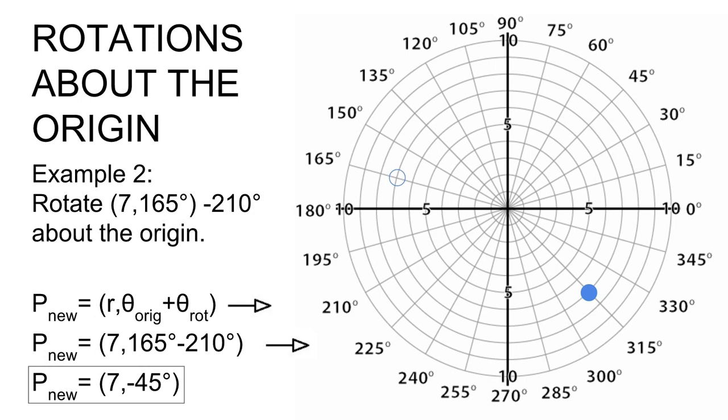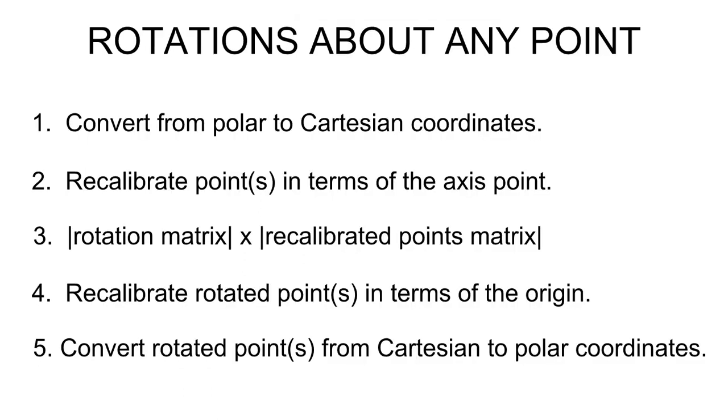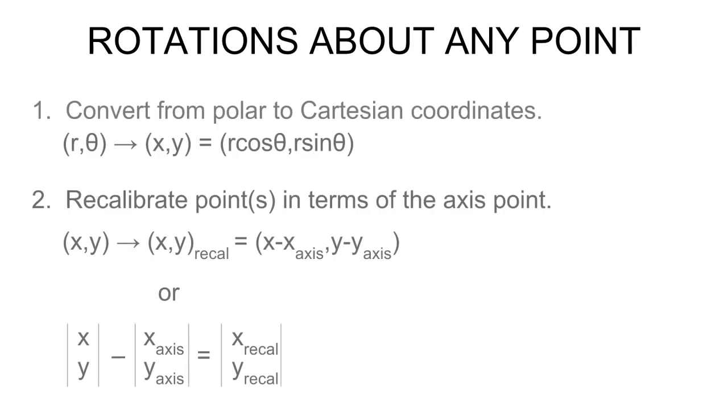Rotations about any point get much more complicated. In these situations, you're not using the origin as the axis. You're picking some other point. Here are all the steps so that you can pause the video to just get an overview of it if you like. As I go through these steps, I'm not going to explain them fully. I think it makes more sense to explain them in the context of an actual problem.